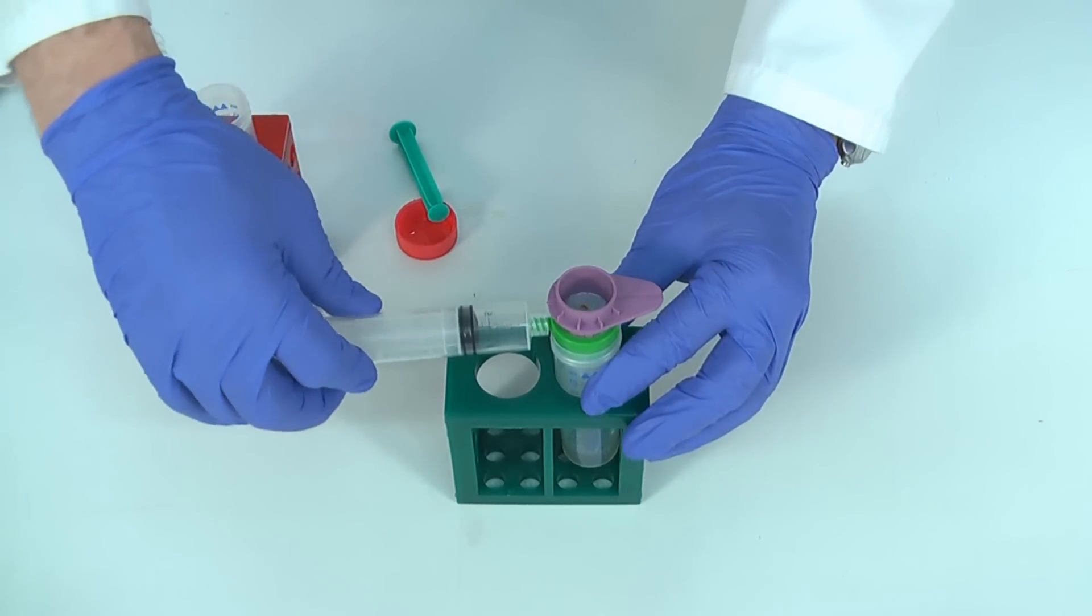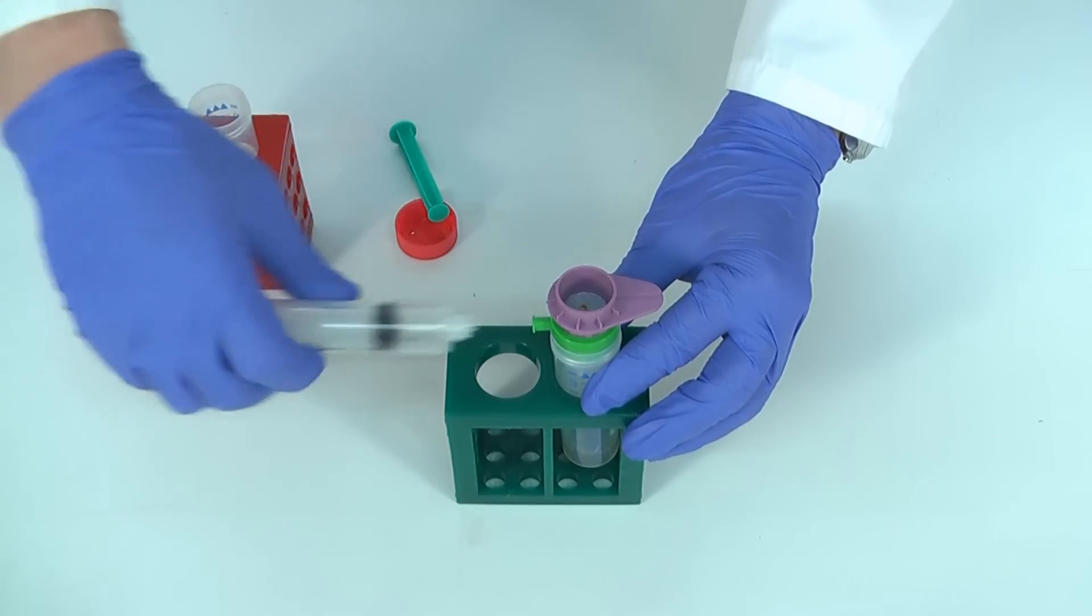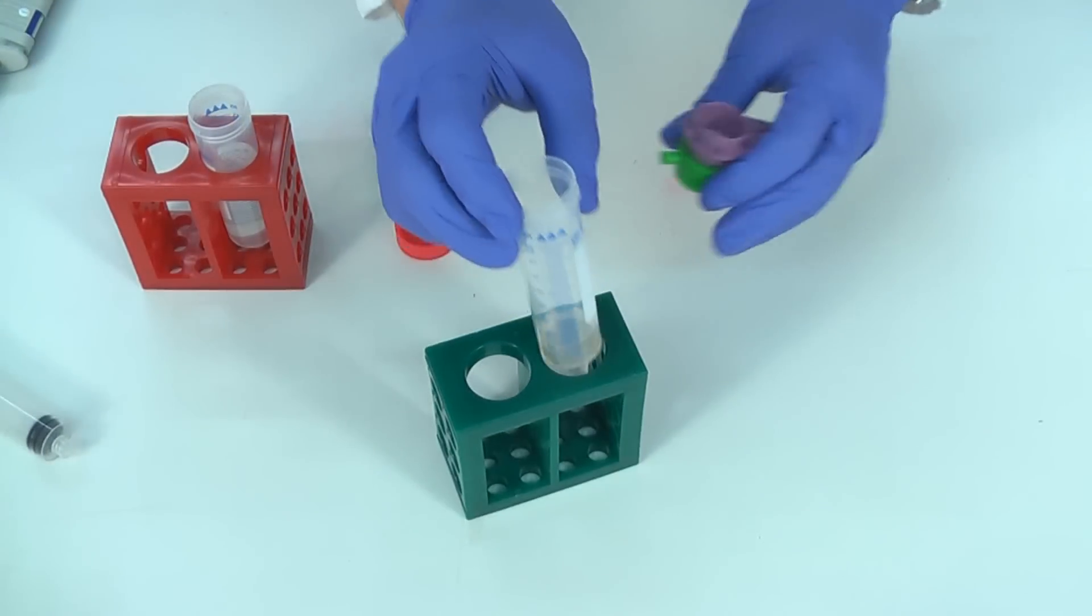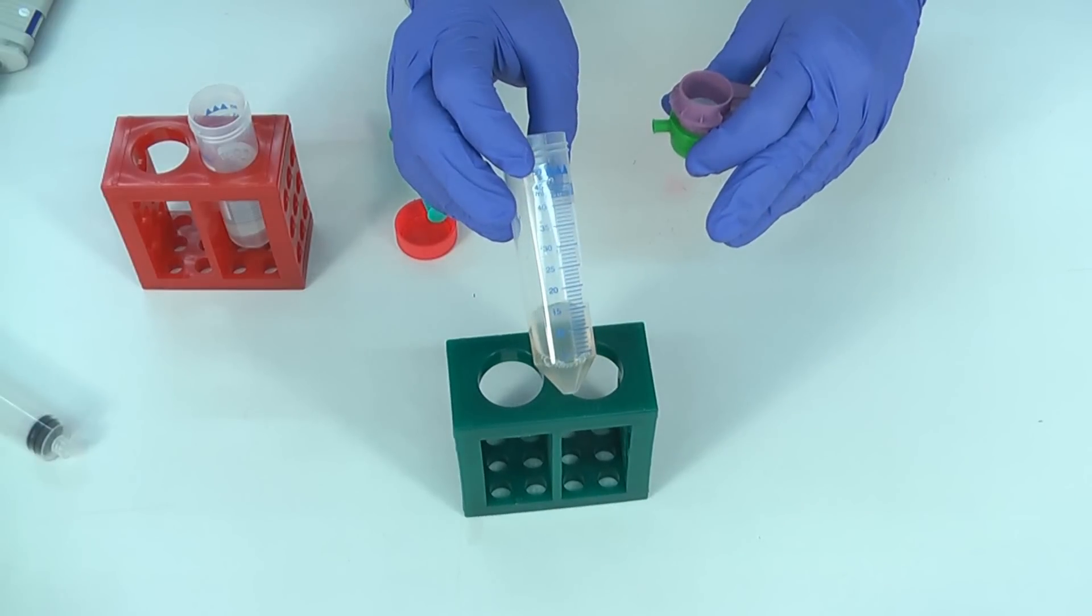Finally, you have your spleen cells in the tube below. You can use them for further application. For example, for cell separation with our pluriBead system to isolate B and T cells.